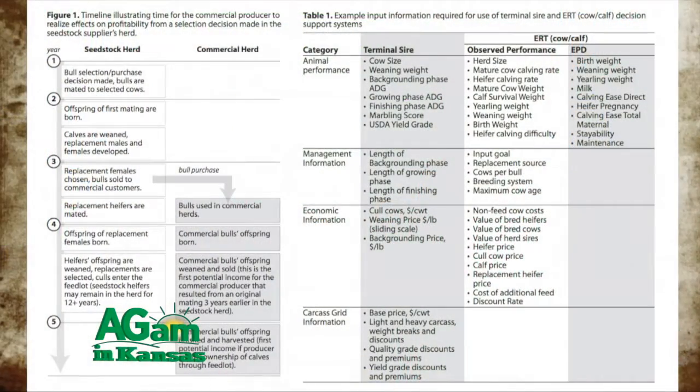The best way to balance those goals is through the selection index. There's an example of an organization that used an index and was able to maintain mature size while increasing carcass weight over time — which is not easy because bigger cows produce bigger carcasses. If you're selecting for heavier carcass or weaning weight, you're probably going to get bigger cows. The selection index is a good illustration of achieving an objective that might not otherwise be possible.